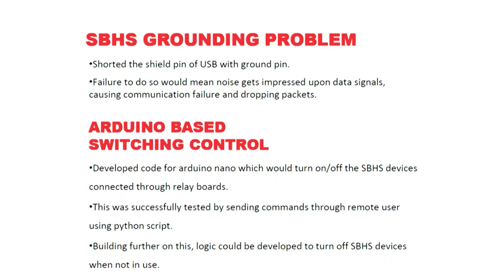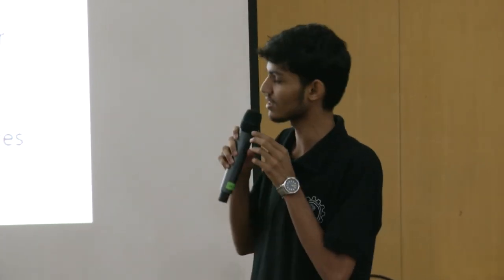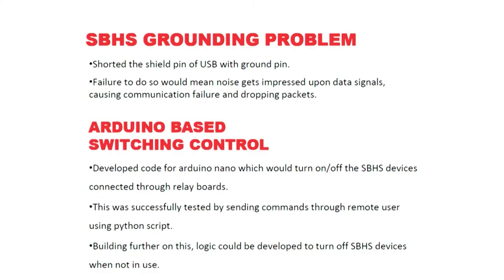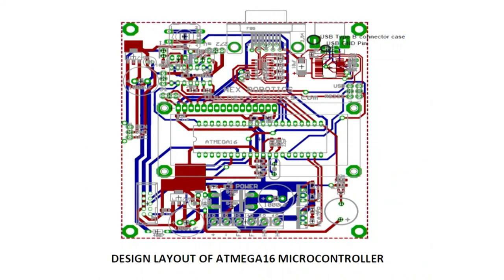Regarding hardware developments: in the SBHS setup, a Scilab script runs on the client side while a Python script in the background sends heater and fan values to the SBHS devices over the USB channel. There was a problem with the SBHS board USB setup — in a USB channel there are five pins: power plus, power minus, data plus, data minus, and a shield pin. When the shield pin is not connected to ground, all noise over the channel is directly imposed on the data signals, corrupting them and causing the SBHS devices to go out of order. In the layout diagram of the ATmega16 board used in the SBHS board, the shield pin and ground pins have been shorted together to fix this problem.